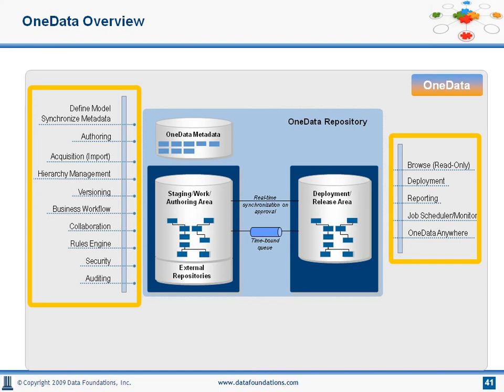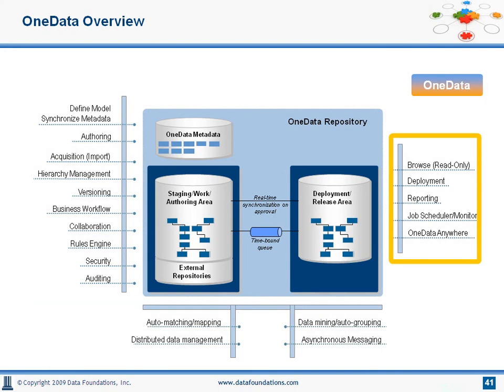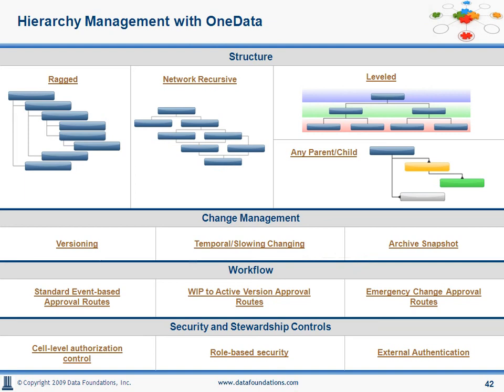OneData helps maintain data quality and enforce governance standards. Matching, cleansing, deduplication, and auto-grouping are built into the solution, as is an asynchronous messaging framework and support for SOA. In brief, OneData can build and maintain different types of hierarchy structures — ragged, network recursive, leveled, and so on — and it provides the necessary tools for comprehensively managing hierarchies and reference data, including different change management strategies, workflow and stewardship, and security controls.